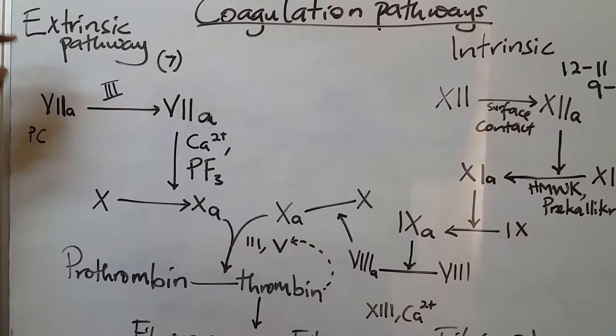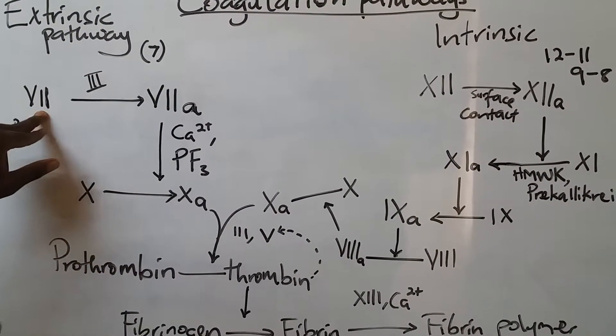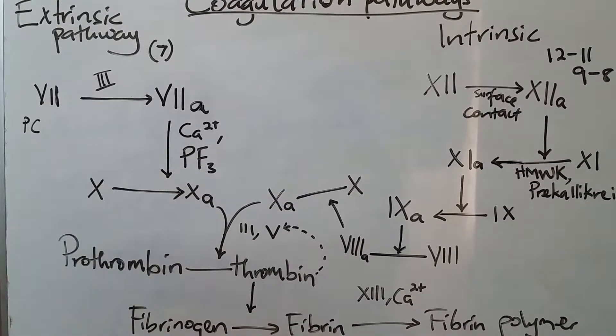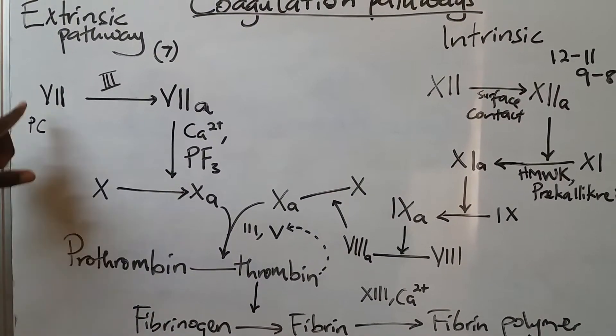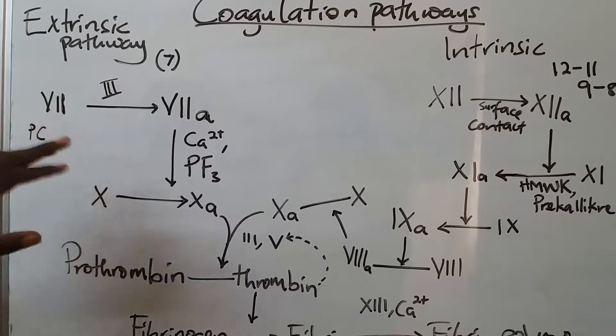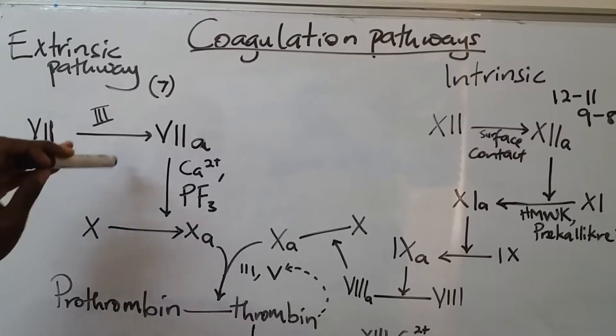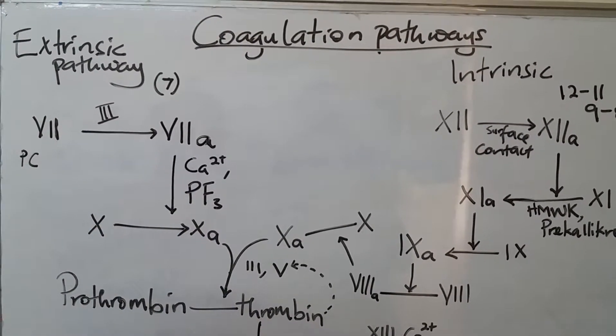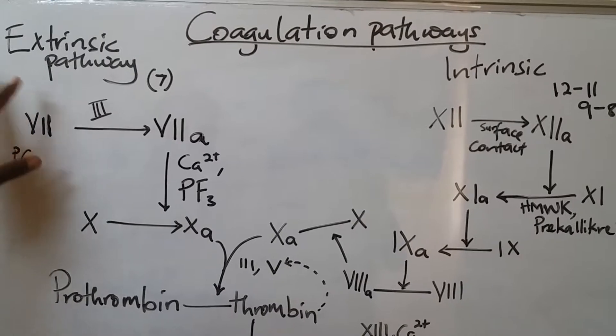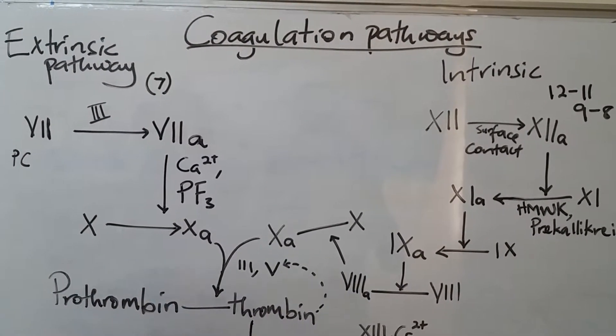We shall start with the activation of proconvertine, and this is going to be done by tissue factor. This is proconvertine. You should make sure you understand and be able to differentiate these clotting factors. So this is activated. If you want to understand these names for these different clotting factors, you can check our previous tutorials at Medical School Tutorials.